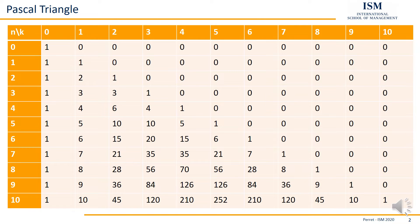First off, we have two numbers. We have here on the left the different rows and here the different columns. So we can refer to each of these cells by the corresponding row n and the corresponding column k. With this in mind, let's first talk about how those numbers result.